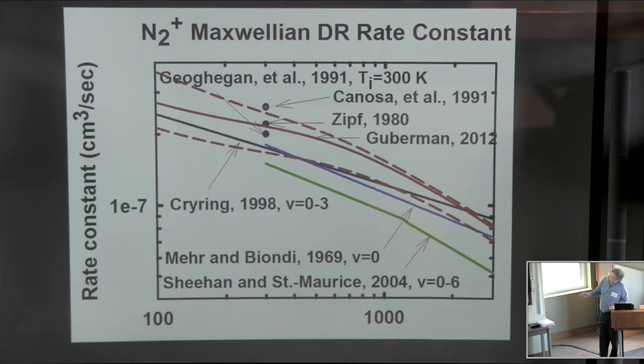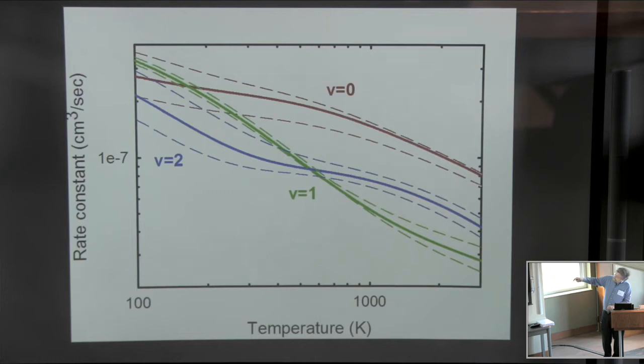A nice thing about estimating the rate constant this way is that instead of saying there's a constant uncertainty with electron temperature, which is not the case, one can show that the uncertainty varies with electron temperature. In fact, at the highest temperatures you can see the upper limit on the uncertainty was very close to the actual calculated rate.